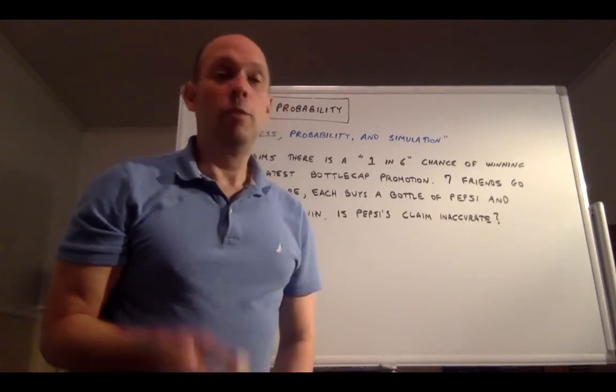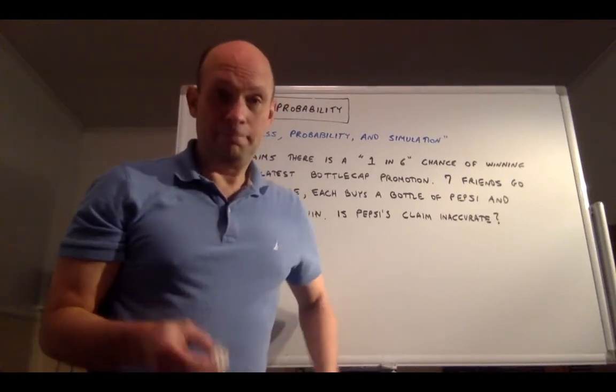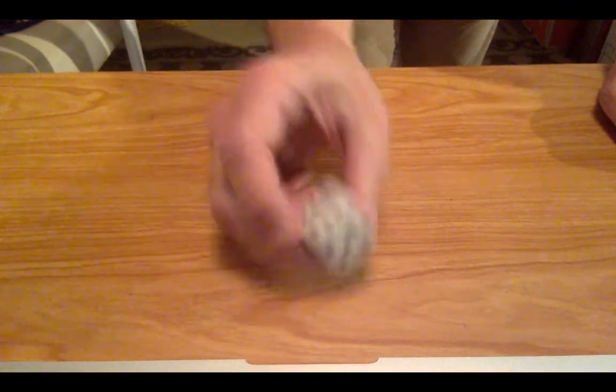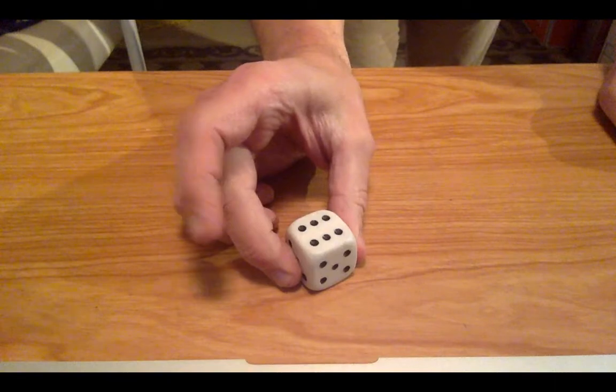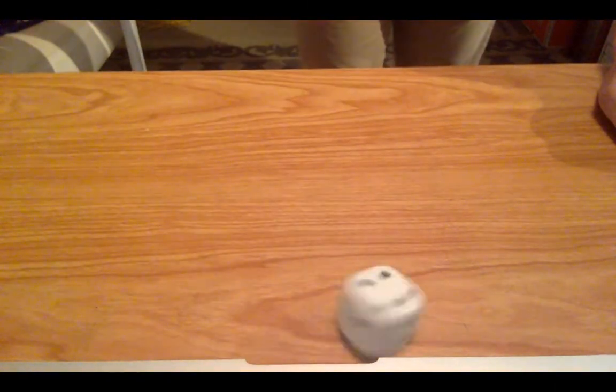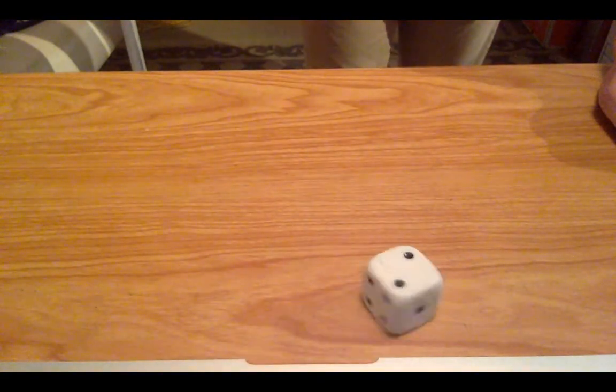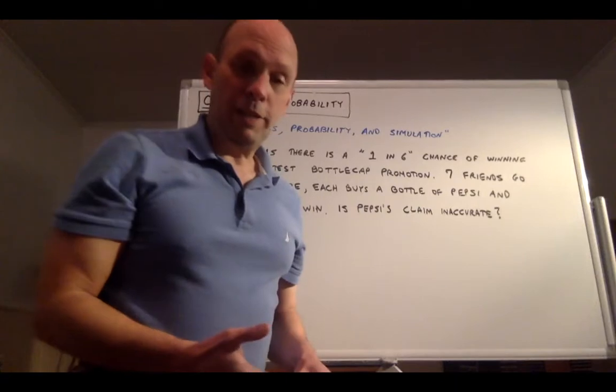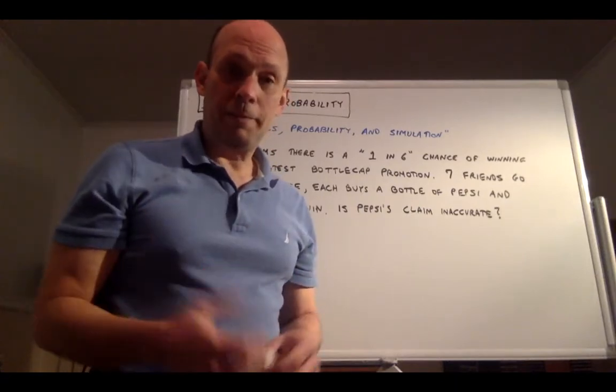Now, if I do it again, will I get 1 out of 7 again? I don't know. Let's try it. So one more time. I'm going to roll the die 7 times. Number of 6 is a winner. 0 for 1 so far. 0 for 2. 1 for 3, I got a 6. 2 for 4, I got another 6. 2 for 5. 2 for 6. 2 for 7. So clearly, I'm not going to get 1 out of 7 every time. Because I got 1 out of 7 that first time, I got 2 out of 7 the second time.